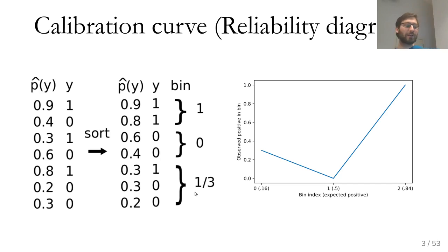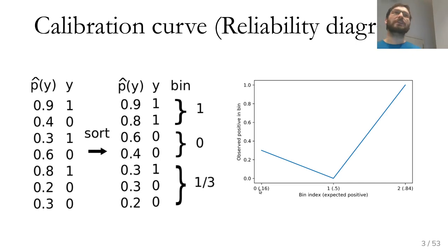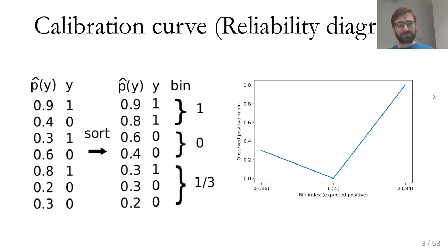The calibration curve plots these bin centers against the observed fraction of positives. For the first bin, the expected number of positives if perfectly calibrated would be 16%. For the center bin, 50%, and for the last bin, 84%. This is obviously very coarse since I just made up seven data points, but if you do this on real datasets you can get quite accurate pictures of how well calibrated a model is.